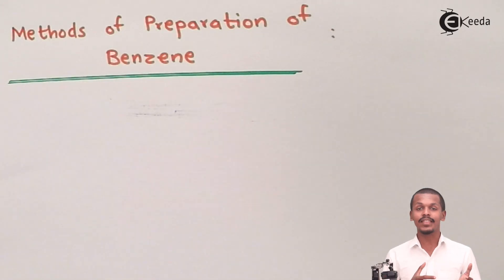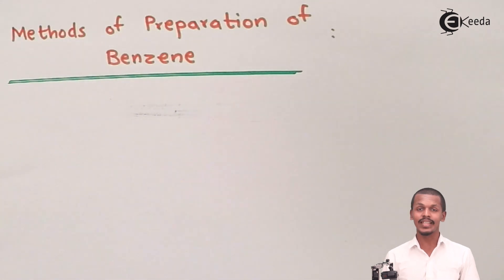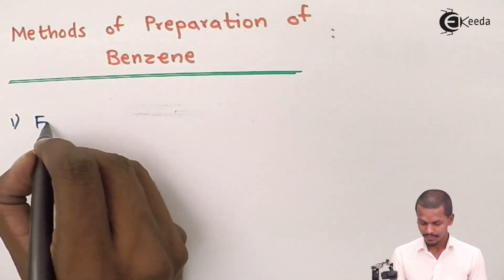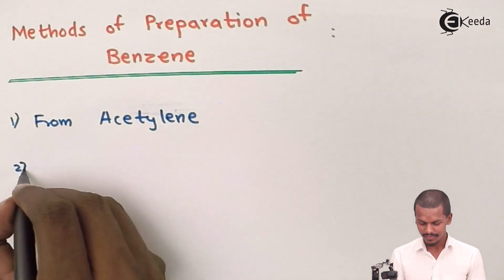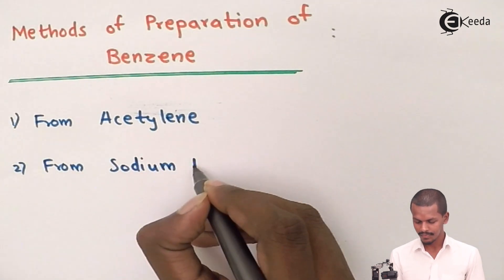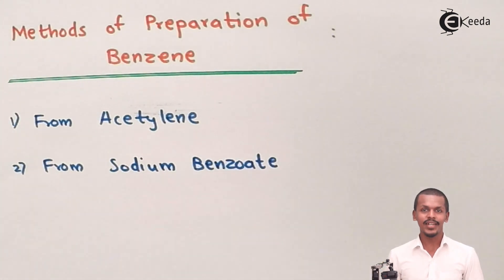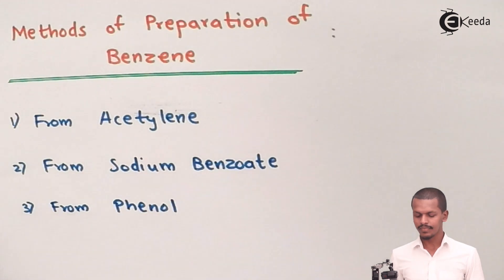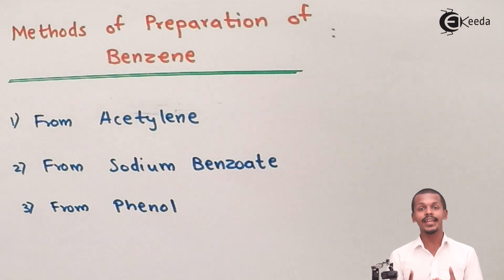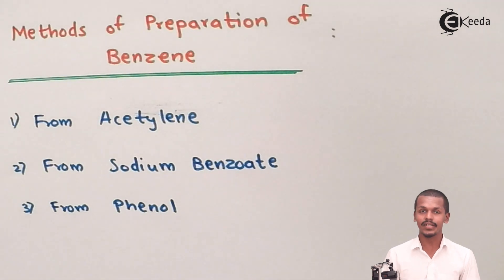The method of preparation of benzene includes three kinds of processes. The first one is we could prepare it from acetylene. The second is we could prepare it from sodium benzoate. And the third is from phenol. These involve different kinds of processes that we are going to talk about.